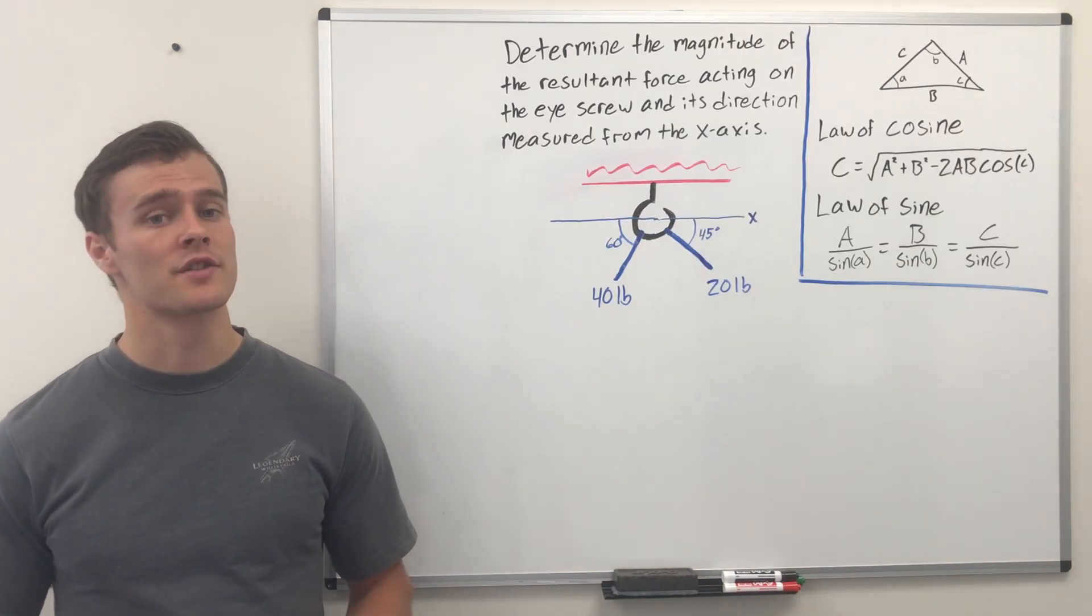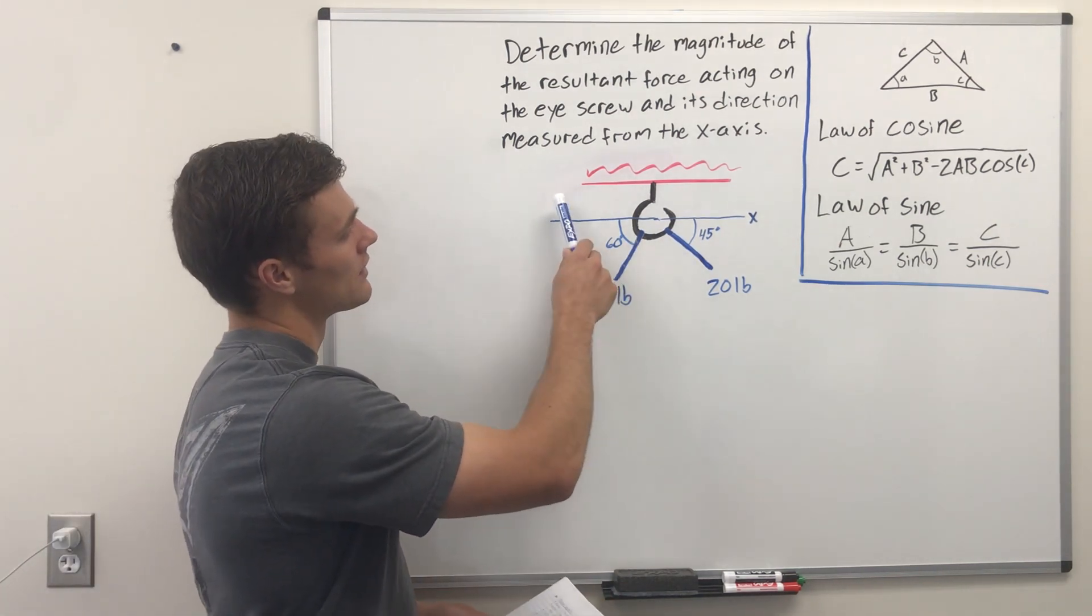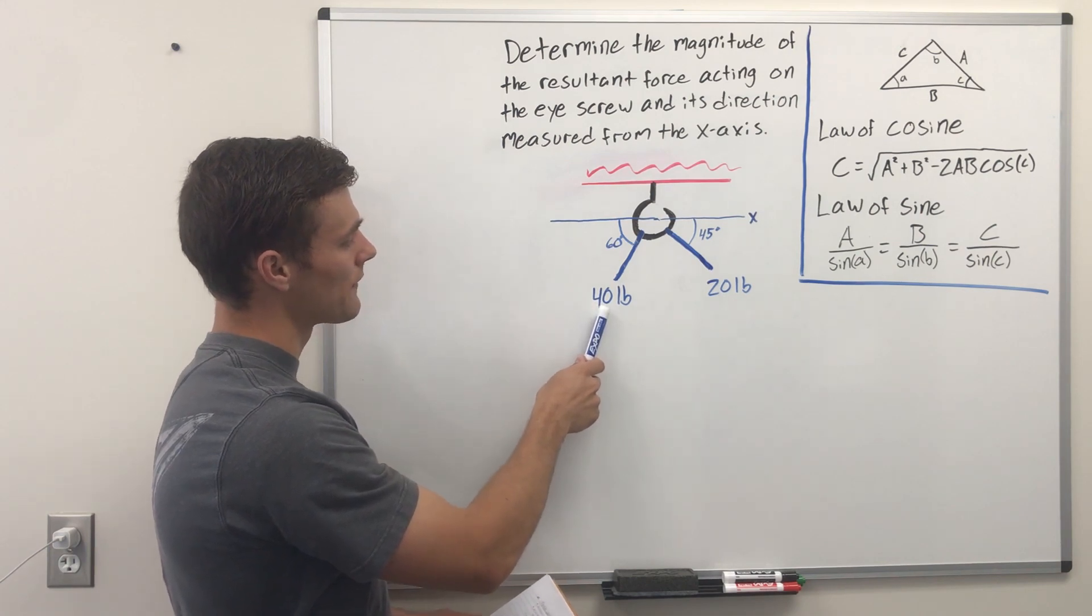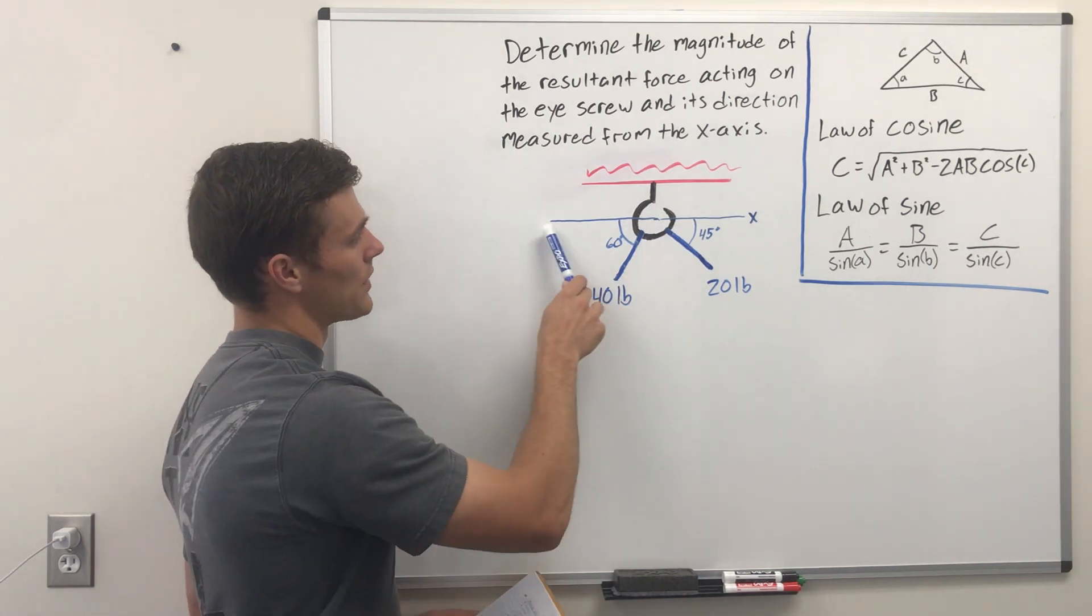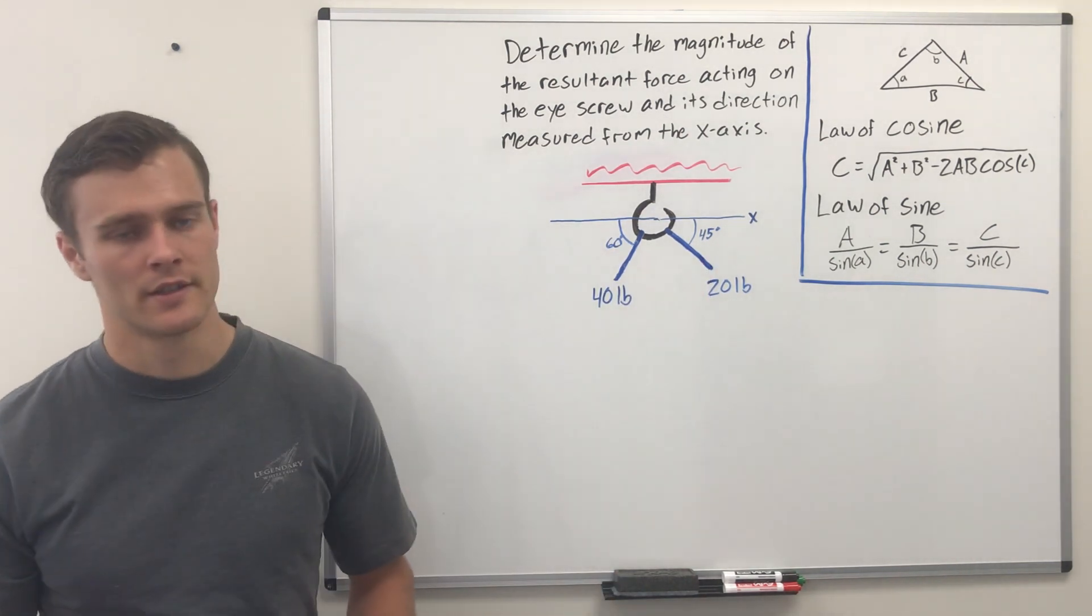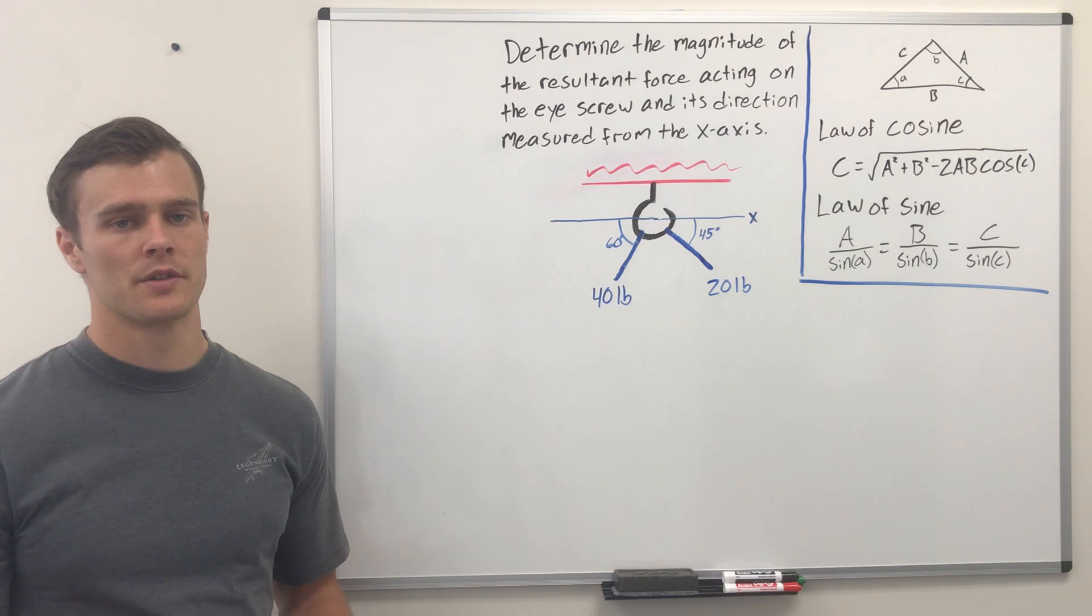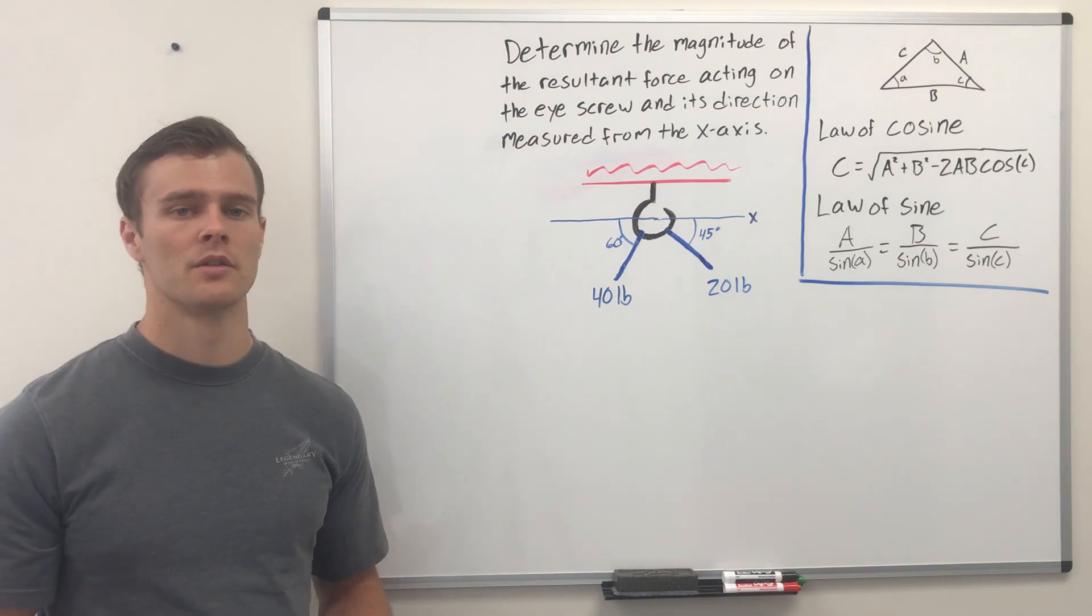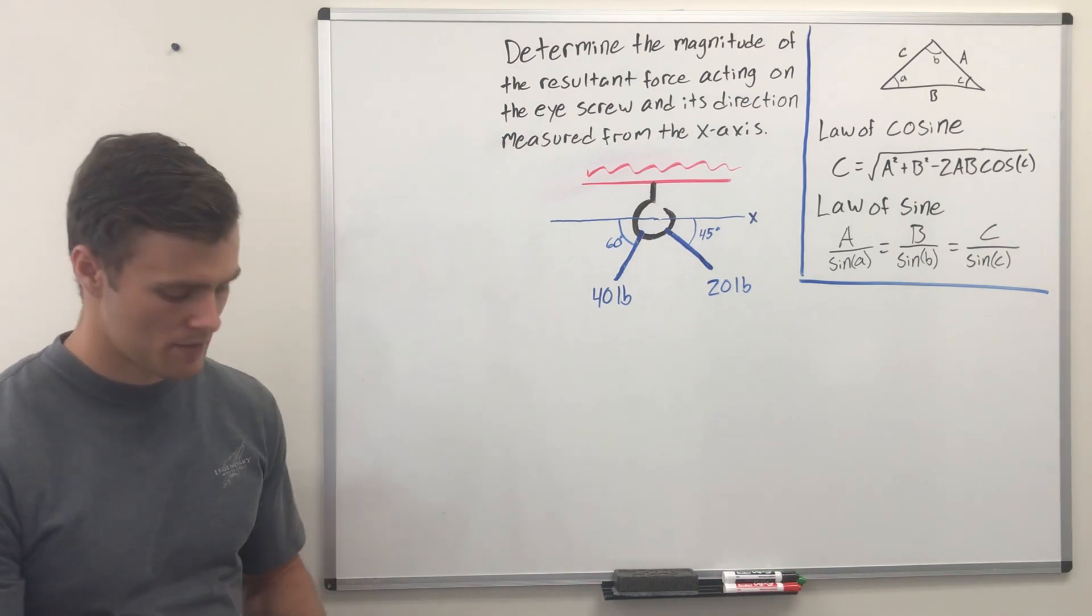We're going to use what we've learned about vectors to solve a problem. What we have here is an I hook that's coming out of the ceiling and it's being pulled on by 2 different ropes, one pulling 40 pounds and one pulling with 20 pounds of force. They're coming off what we're going to call the x-axis at 60 degrees and at 45 degrees. What we need to determine is what the resultant force is on this I hook and what the direction it is pulling at.